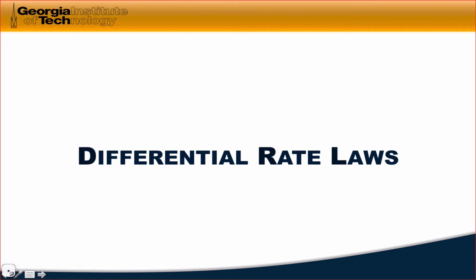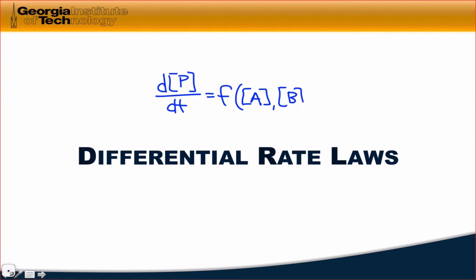In this video, we're going to discuss differential rate laws, which relate the rate of a reaction expressed as a derivative — say dp/dt, where p is a product — to the concentrations of reactants in solution at the time when that rate is relevant. So say the reactants are A and B; there's a function of those molarities that we can set equal to the derivative, and this is the essence of the differential rate law. It's called a differential rate law because we use differentials and a derivative in the rate law. So we're not looking at concentration in time directly; we'll look at that when we cover integrated rate laws. Here we're looking at how the rate of change of a concentration is related to concentrations of reactants.